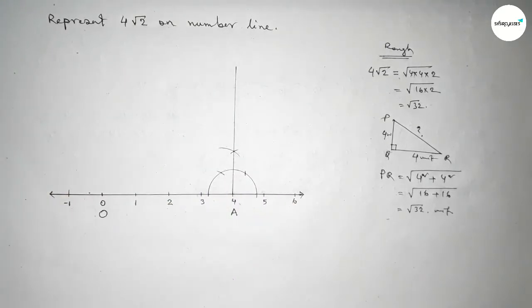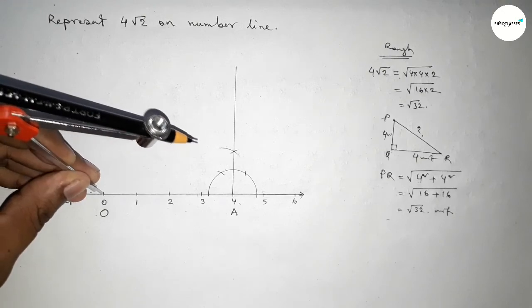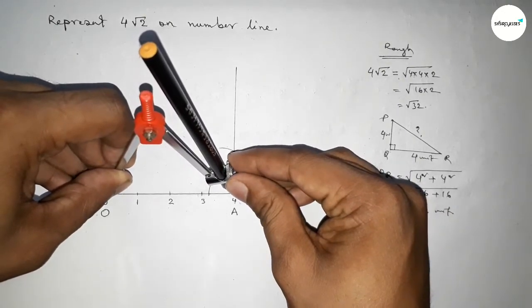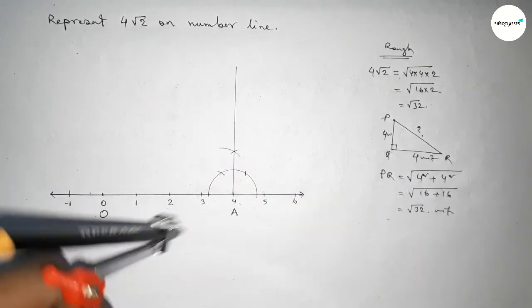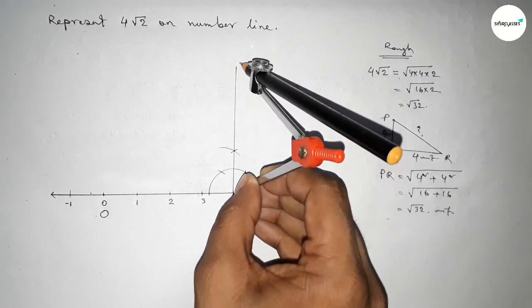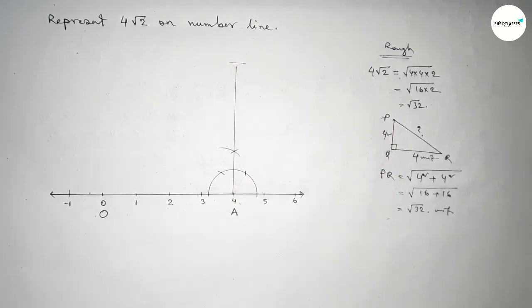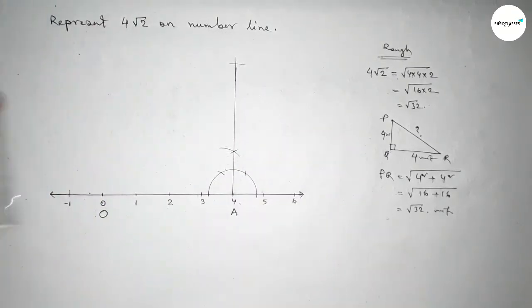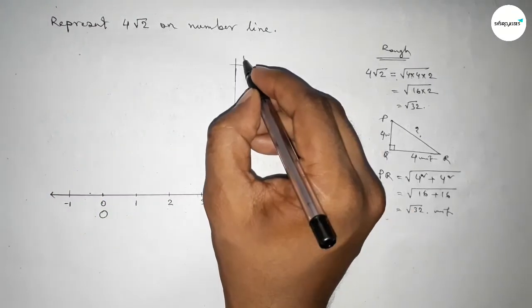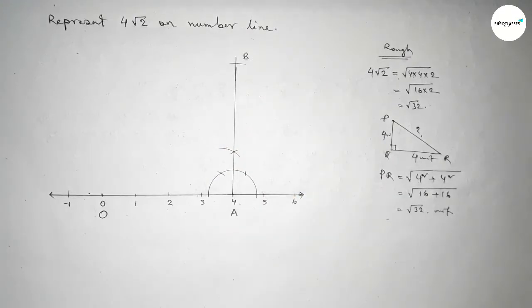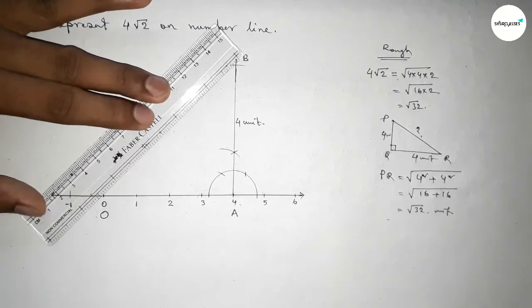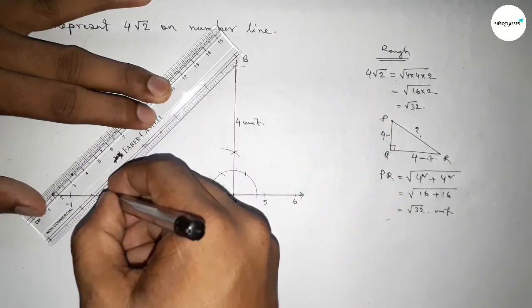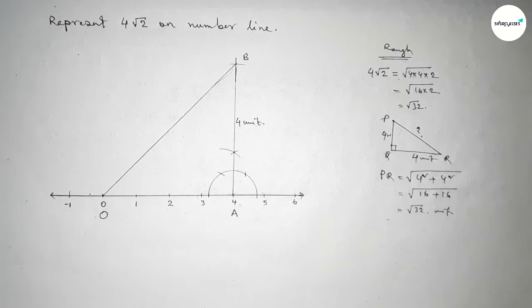Now taking the length 4 unit by using compass by this way and putting the compass here and cut here. Okay, we have to increase this line, so taking here point B and this length is 4 unit length. Now joining O and B.